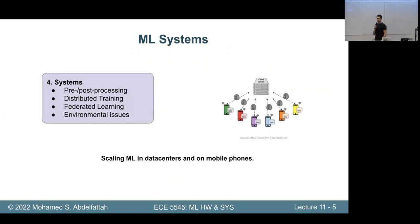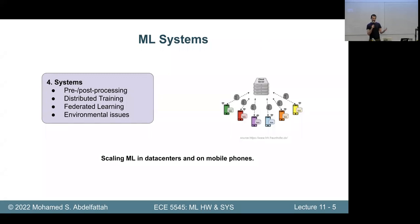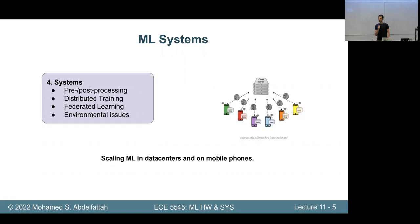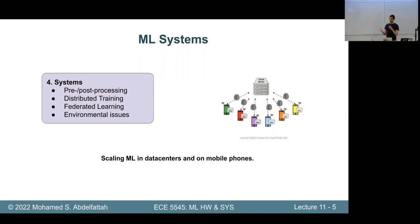ML systems is about the real-world deployment of a machine learning model or deep neural network. What happens when you deploy on a phone? What happens when you train a large model with multiple devices — how do you synchronize and connect them? What kind of pre- and post-processing do you need? We'll discuss how to scale machine learning in data centers and on mobile devices, considering system issues beyond just DNN efficiency.